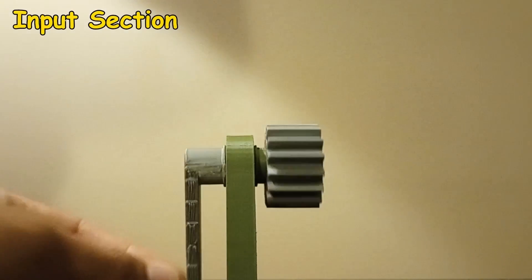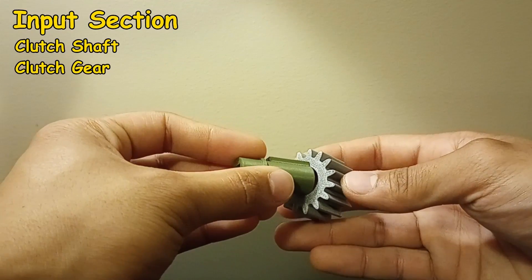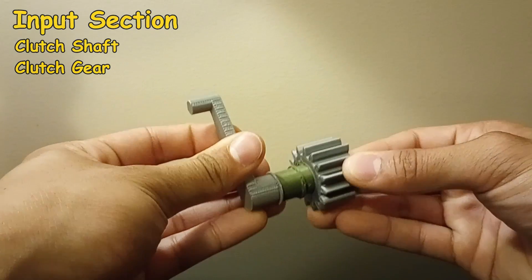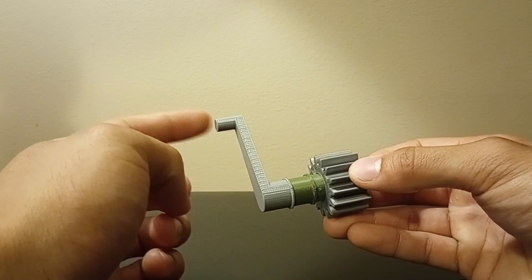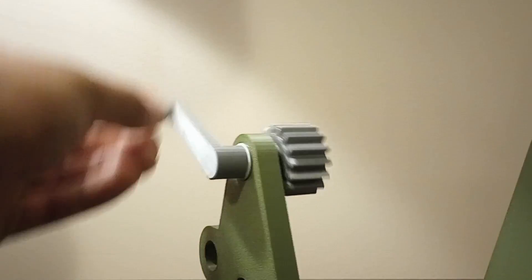The input section contains the clutch shaft and clutch gear, which are directly connected to a power input. In the case of a car, the power source would be an engine, but unfortunately I do not have one, and we must make do with this hand crank.